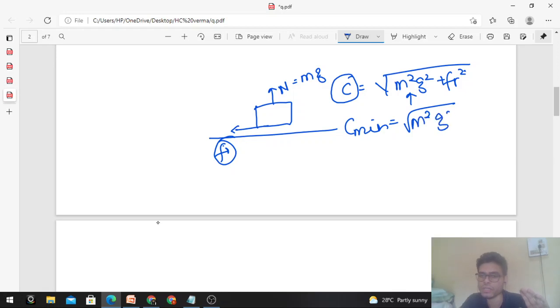So friction's minimum value will be zero. So that is M²G², or you can say Mg. And contact force's maximum? I'm talking about contact force. Maximum means Mg is constant, and make friction maximum. Friction's maximum is μMg. So √(M²G² + M²G²μ²). From here you will get Mg√(1 + μ²).